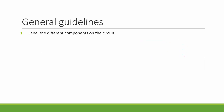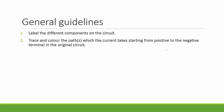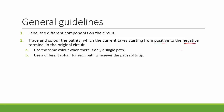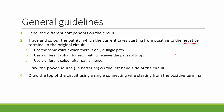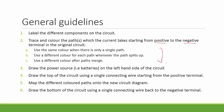The first step is to label the different components of the circuit. Then trace and color the paths which the current takes, starting from the positive to the negative terminal in the original circuit. Use the same color if there is only one single path. Use a different color for each path whenever the paths split up, and again a different color when split paths merge together. Then redraw the circuit by drawing the power source or battery on the left-hand side, draw the top using a single connecting wire from the positive terminal, map the different color paths on the new circuit diagram, and draw the bottom using a single connecting wire back to the negative terminal.